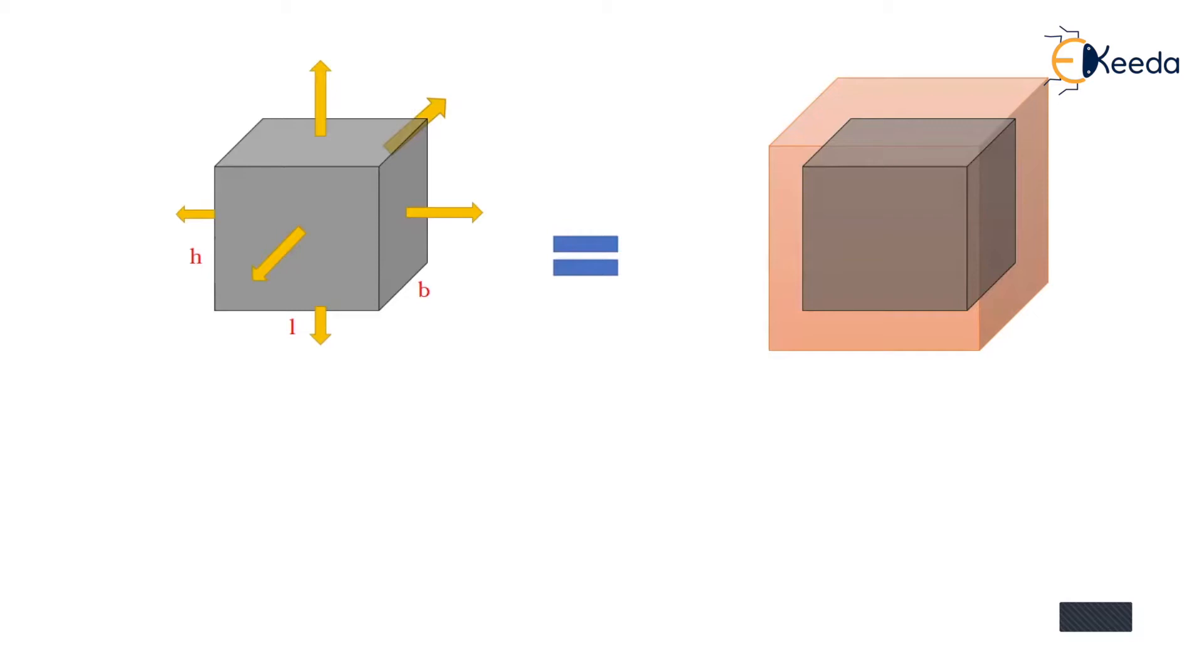Now we can say the new dimensions of this cube can be h plus delta h where delta h is change in height, l plus delta l where delta l is change in length, and b plus delta b where delta b is change in breadth.